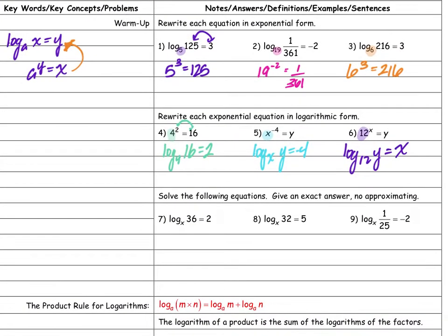For the last part, solve and give an exact answer — which means no decimals. I can't really solve this as a logarithm, so I'll rewrite it as an exponential equation. This gives x squared equals 36. What number squared equals 36? x would equal 6.